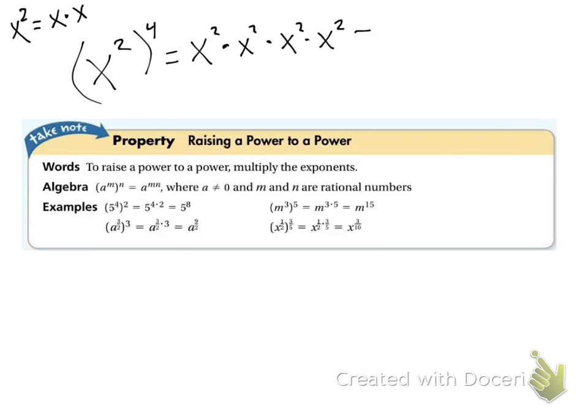And then if I want to figure out what that was with just one x, since I'm multiplying, I'd add the exponents, right? 2 plus 2 is 4, plus 2 is 6, plus 2 is 8.